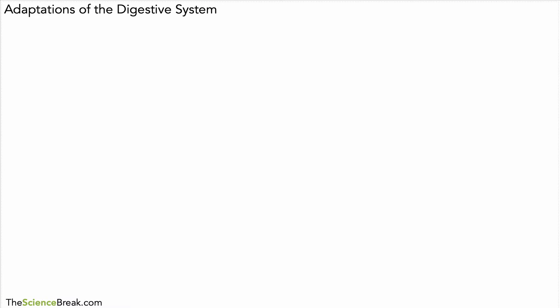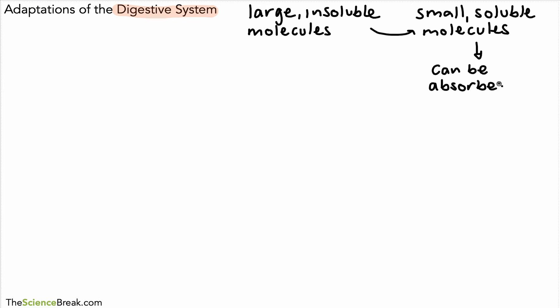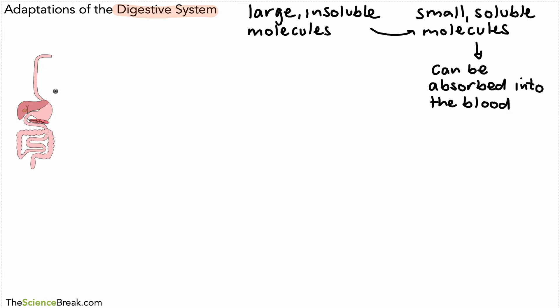Hello, today we are looking at adaptations of the digestive system. A couple of videos done on this already, but for now let's have a little recap of what the digestive system does. The digestive system digests food by making large insoluble food molecules into small soluble food molecules. This is important because these small soluble molecules can be absorbed into the blood and transported all around the body to where they're needed.